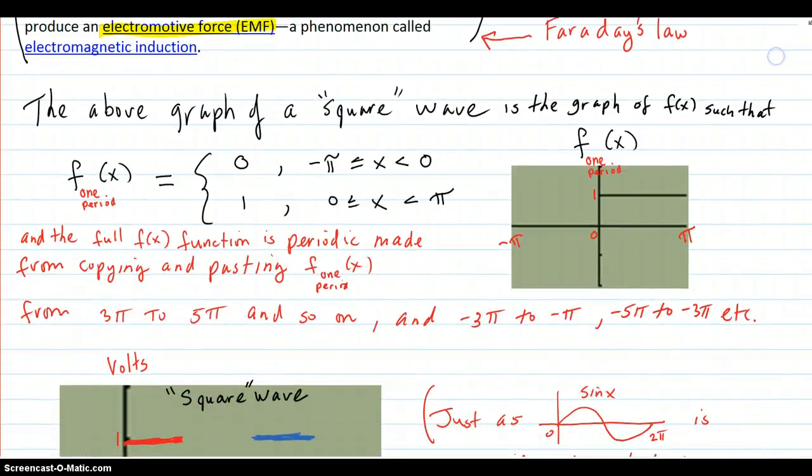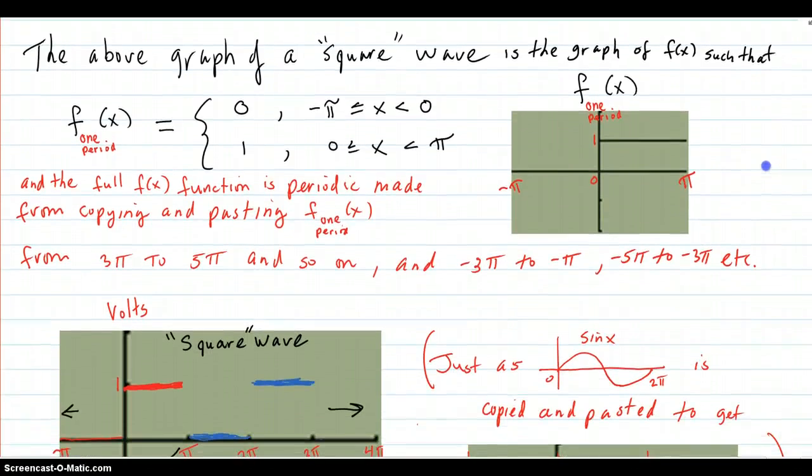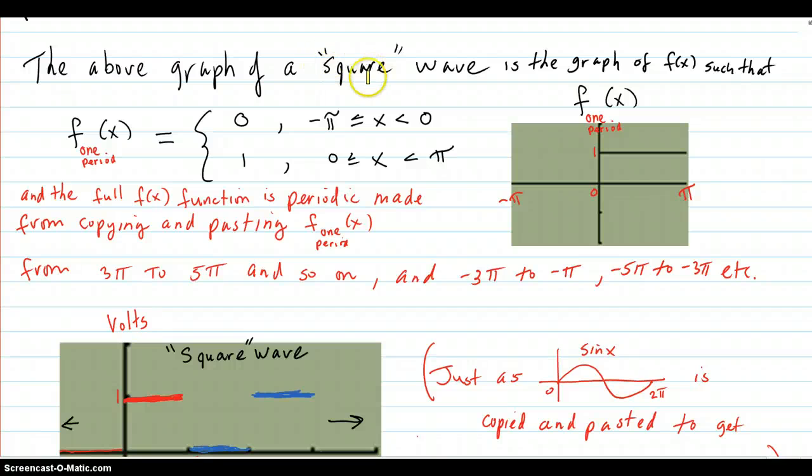So let's see where our math comes in here. So the above graph of the square wave is the graph of a function such that one period of the function is this. It was zero from negative pi to zero. That's zero here. And then it was one from zero to pi.